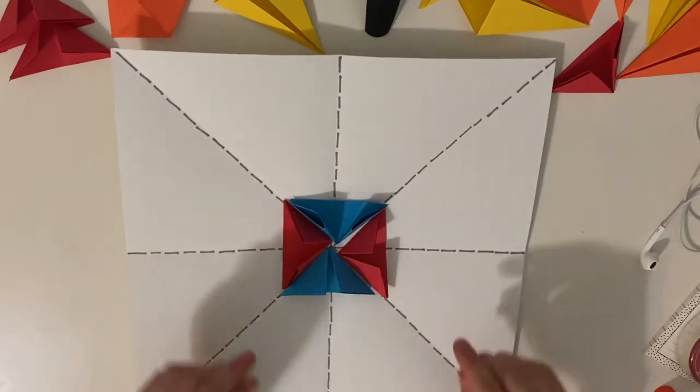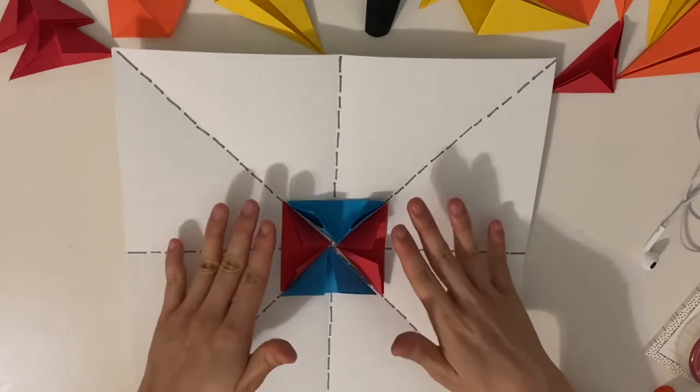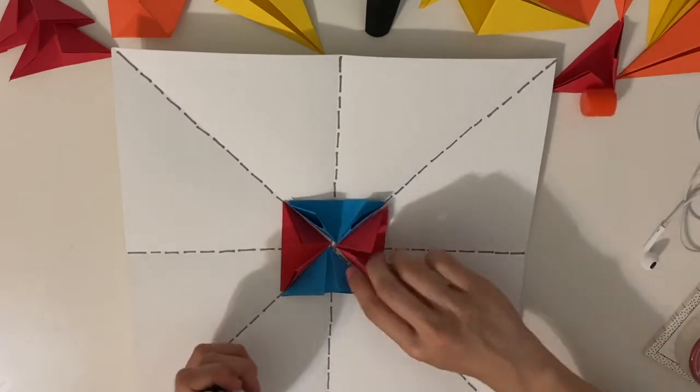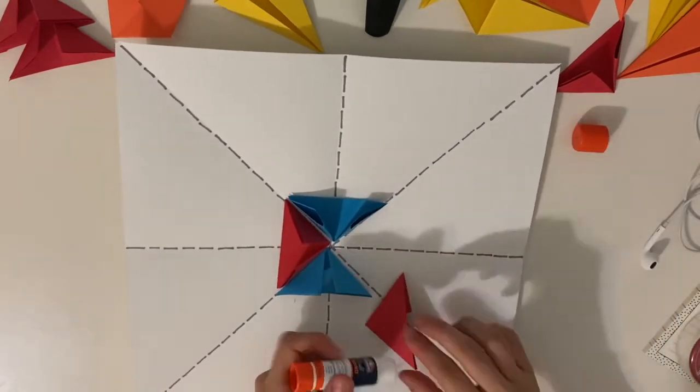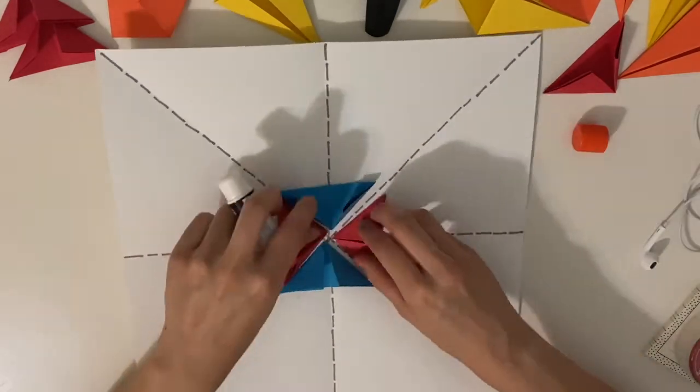When you're happy with the center of how you want to glue them down, you're going to put glue on the back of your pieces and flip them over and into your triangles. So I'm going to glue those down.